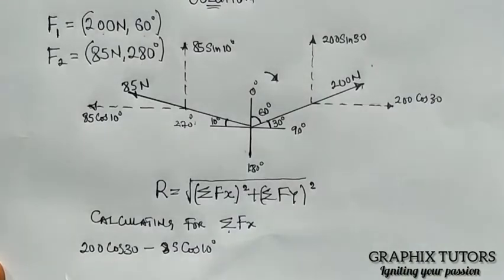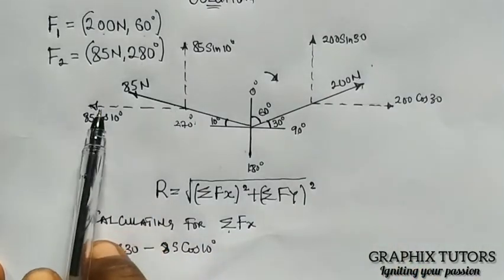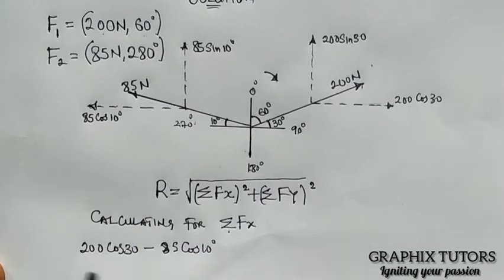You can use that as well, but definitely facing the left is negative. Now, my 200 cos 30 will be